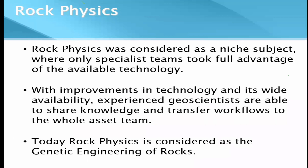When rock physics was first developed, the distinction with petrophysics was important. Petrophysics refers to wireline log-based properties that are measured, whereas rock physics usually deals more with elastic properties derived from various parameters — maybe petrophysical parameters. With improvements in technology, many developments have been made and it has become a mature science. Today rock physics is considered as a genetic engineering of rocks, allowing very detailed microscopic interpretations.